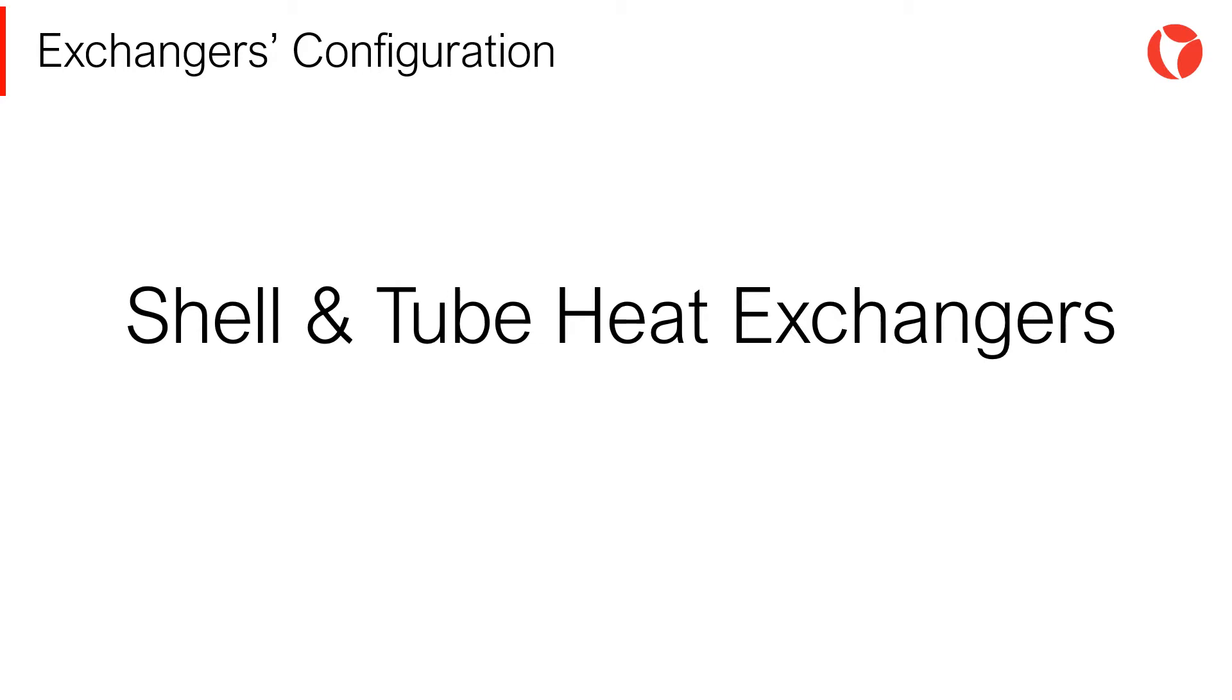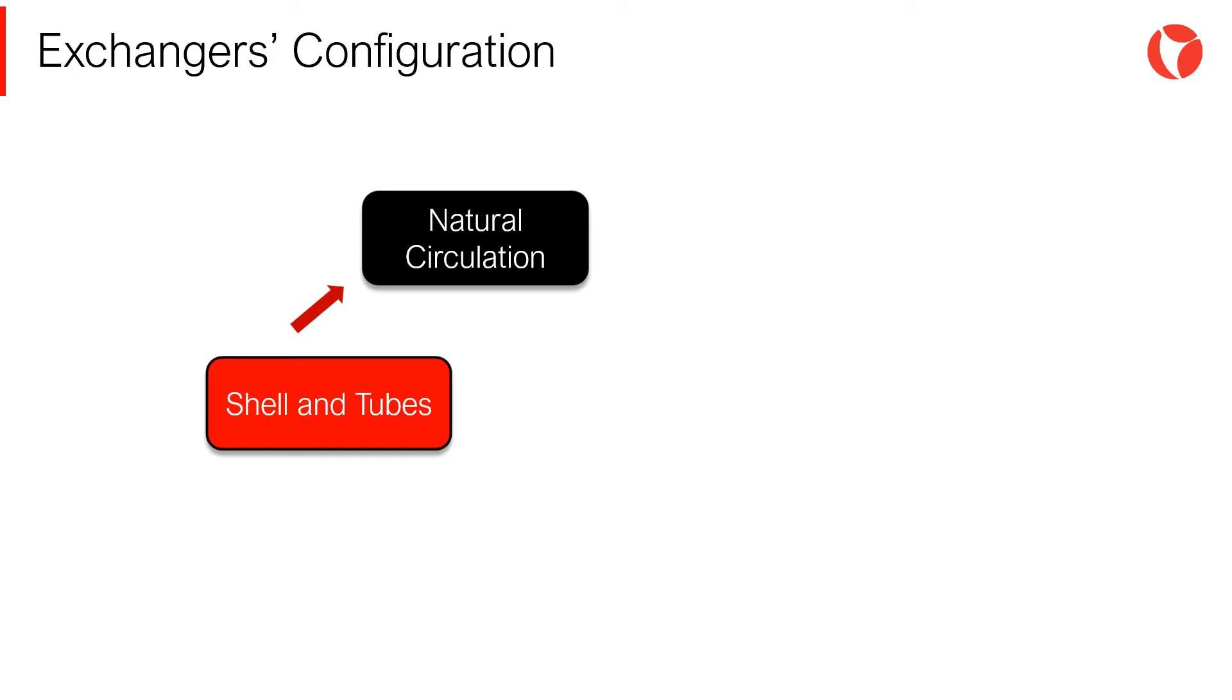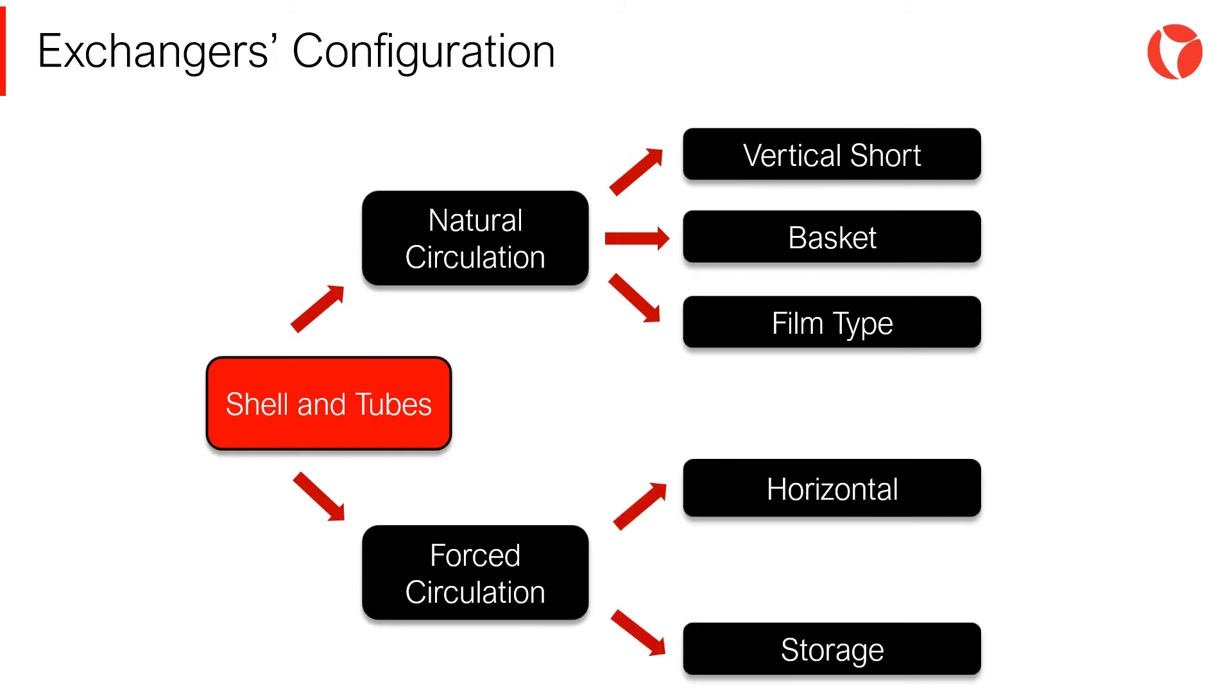There are different types of shell and tube heat exchangers. The most accepted classification is shown below. Shell and tube heat exchangers can be classified into natural circulation and forced circulation. Within natural circulation there are vertical and short heat exchangers, basket type or film type. Within forced circulation we can find horizontal heat exchangers and storage type shell and tube heat exchangers.